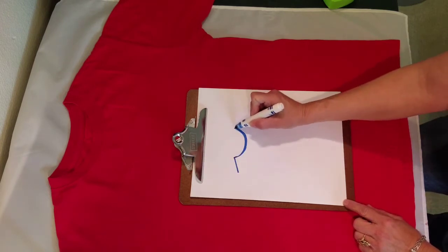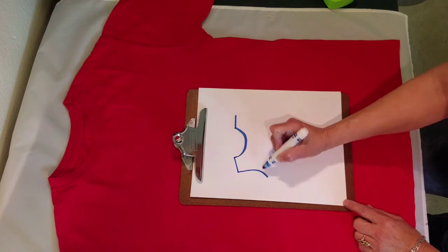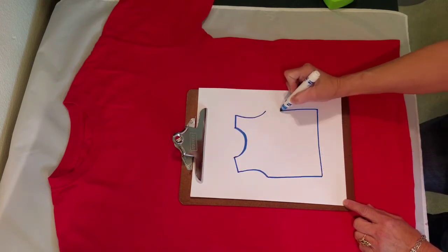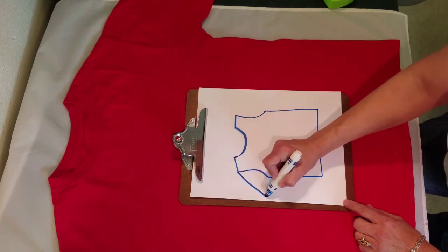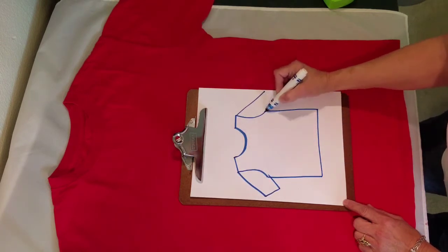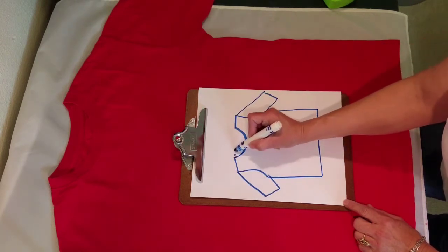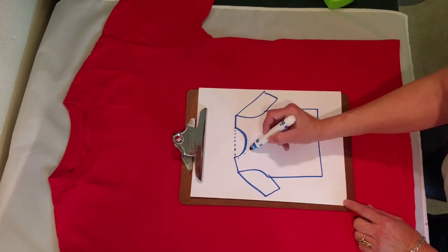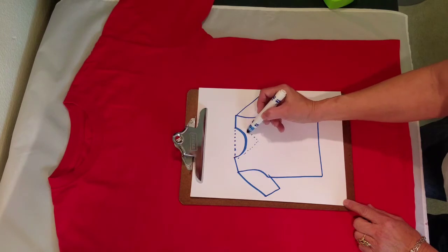So we're starting out with the neck, shoulders, armholes, body, sleeves, and back neck. If you wanted to make a v-neck or a square neck, you would draw it in like that.